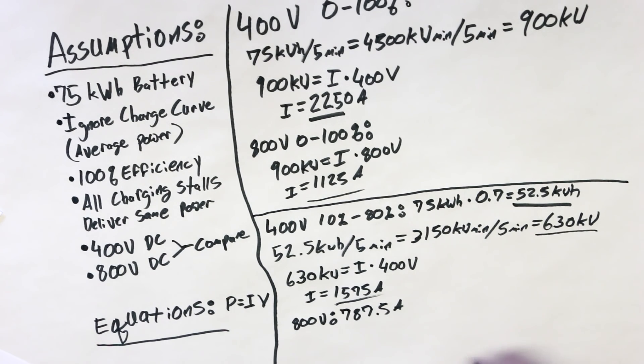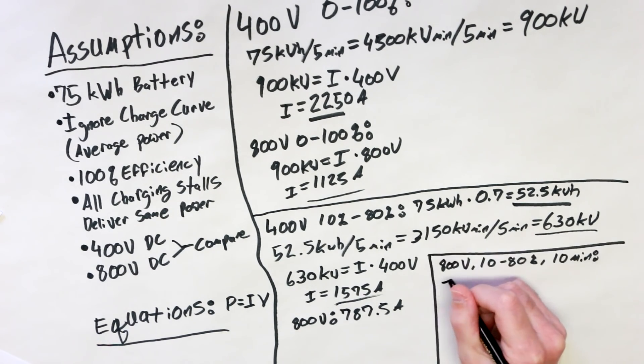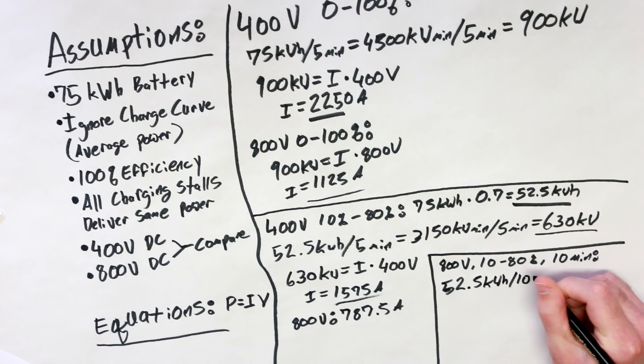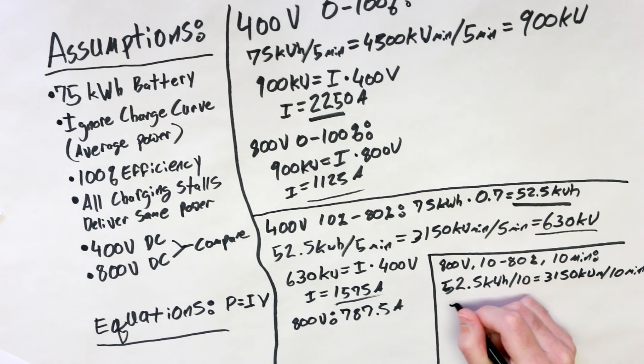So, let's take that 5 minute charge requirement, and let's turn it into a 10 minute charge requirement, and we'll keep the 800 volt charging system and see where this puts us. So, 52.5 kilowatt hours divided by 10 minutes equals 3,150 kilowatt minutes divided by 10 minutes, and I'm getting off the paper here, so I jump down the line, equals 315 kilowatts.